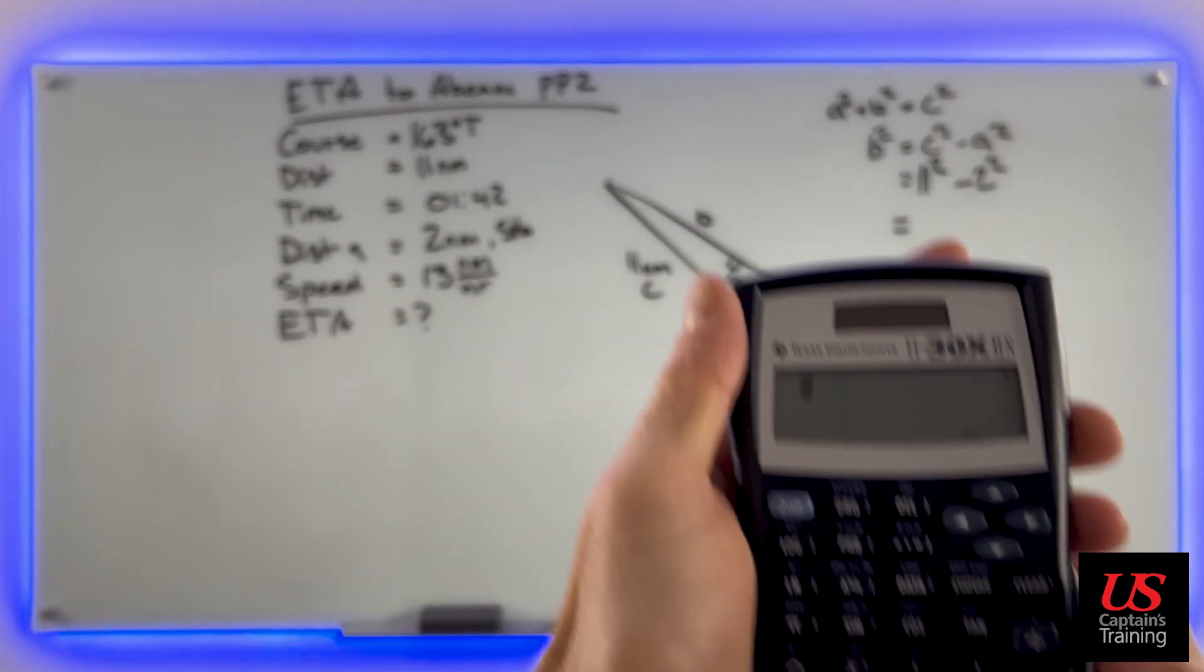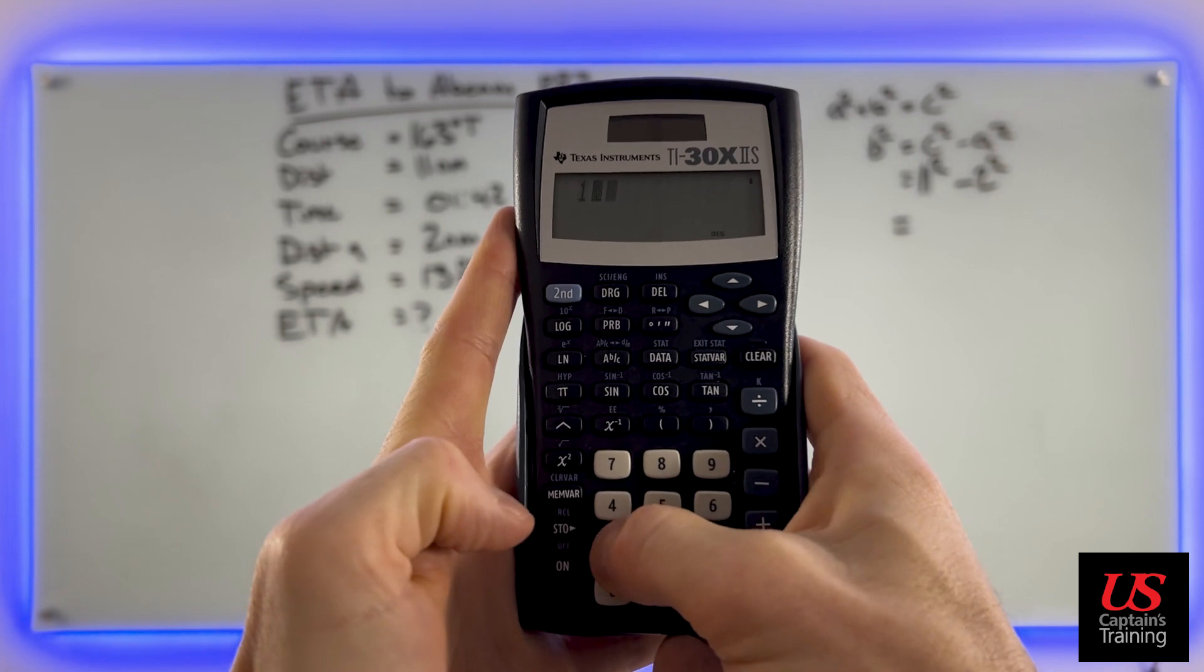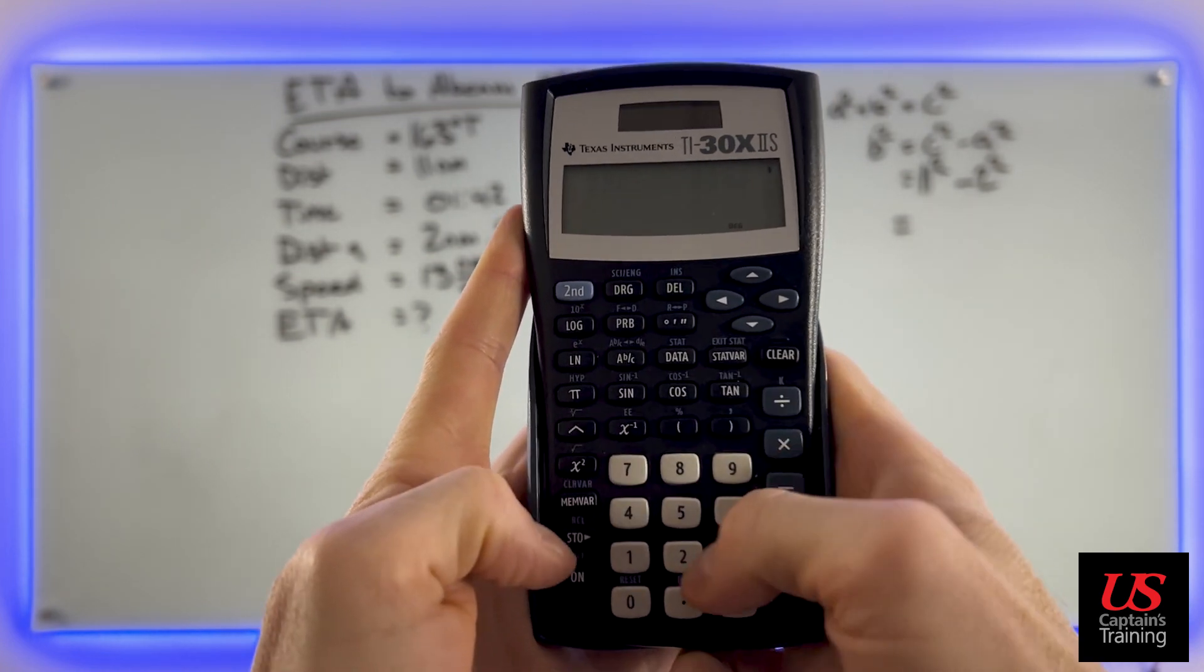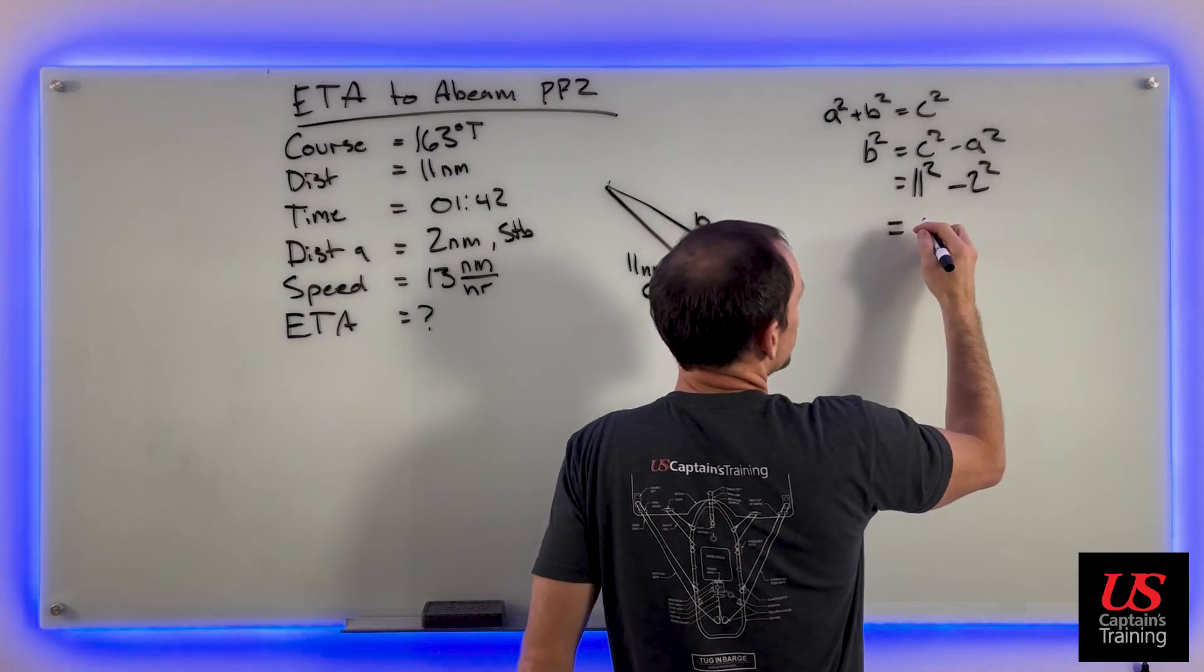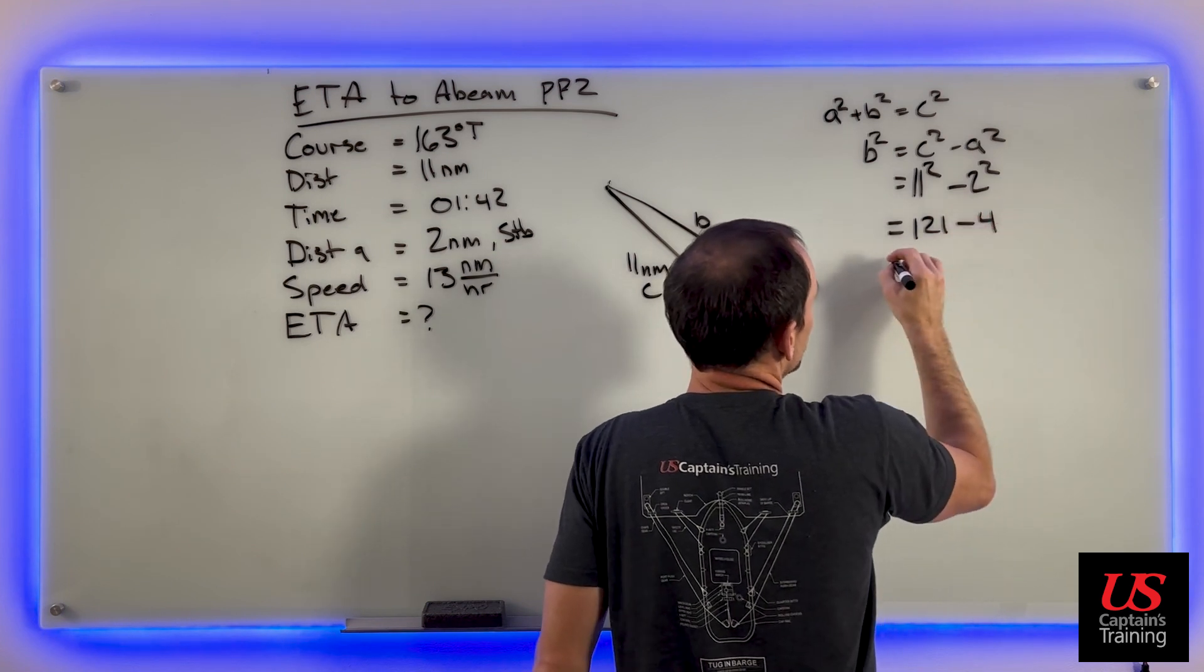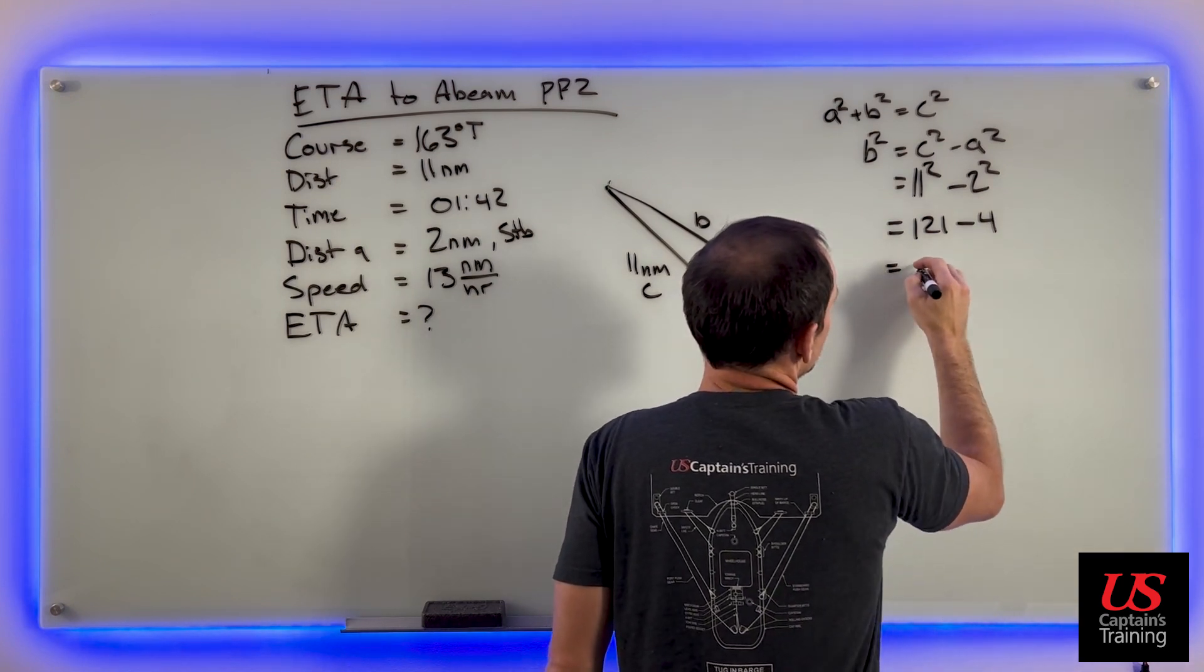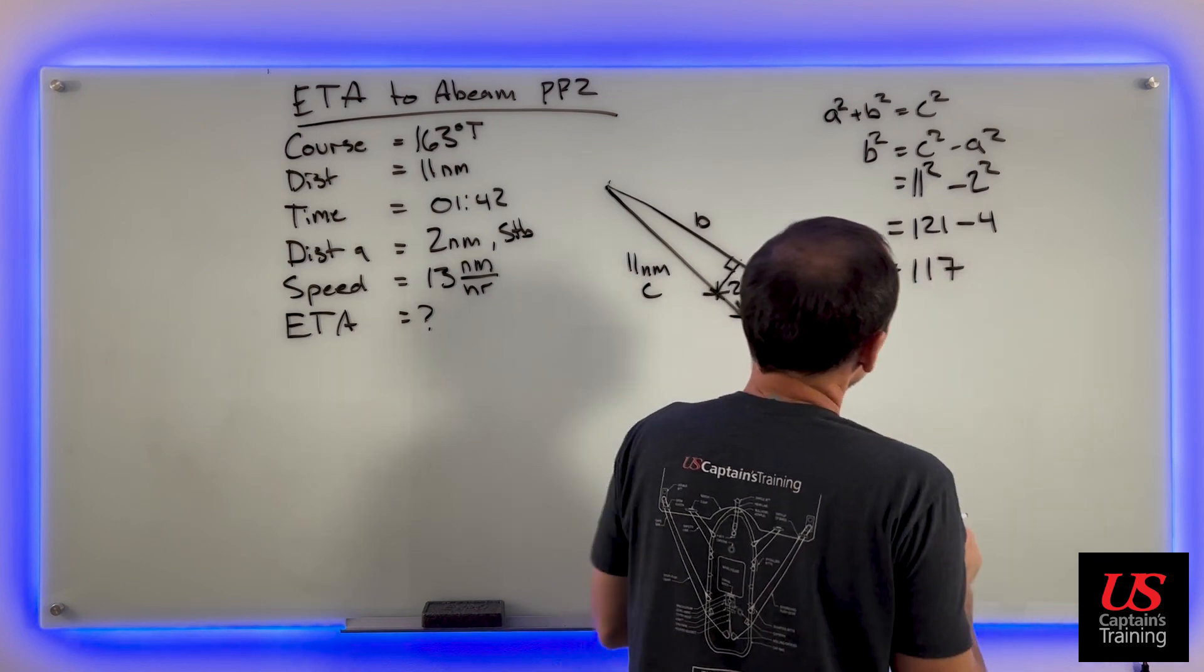So you can see the buttons that I hit. 11 squared equals 121, 2 squared equals 4. So we have 121 minus 4. We put that into our calculator and we get 117.